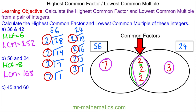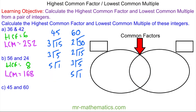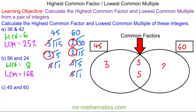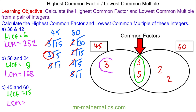Now try to work out the highest common factor and the lowest common multiple of 45 and 60 — pause the video and resume when you're ready. For the solution: the prime factors of 45 go in one circle and 60 in the other. The 3 is common with the other 3, and the 5 is common with the other 5, so they overlap. We have a 3 left in 45 and 2 times 2 remaining in 60. The highest common factor is 3 times 5, which is 15, and the lowest common multiple is 180.